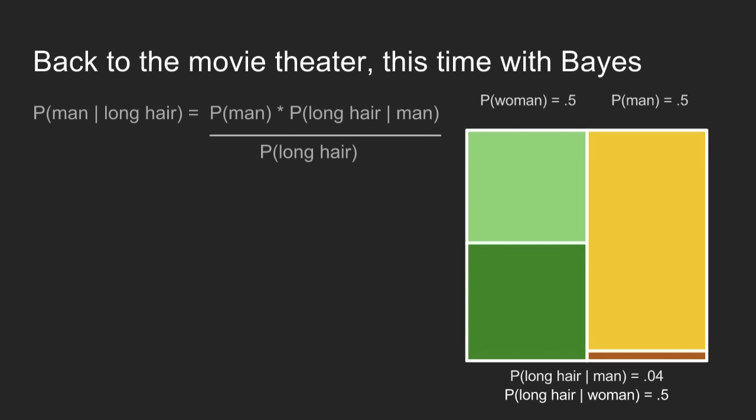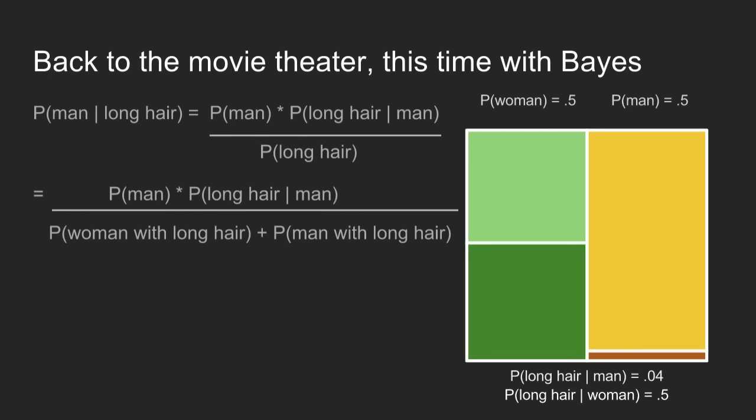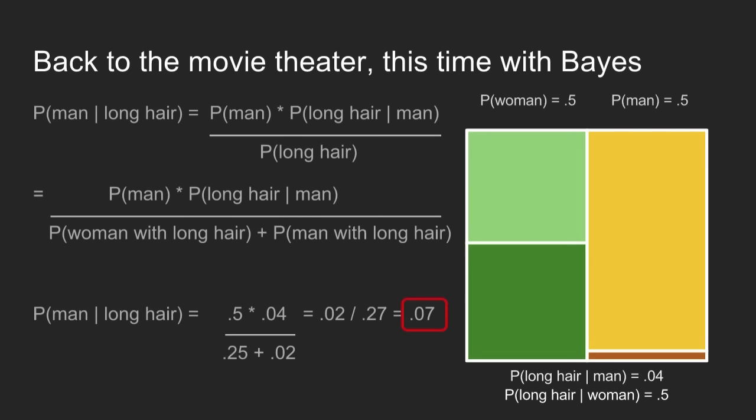Using this formula, we can go back to the movie theater and plug in what we know: the probability that someone is a man, the probability that a man has long hair, and the marginal probability that someone has long hair — which is just the probability of a woman with long hair plus the probability of a man with long hair. We plug all that in.